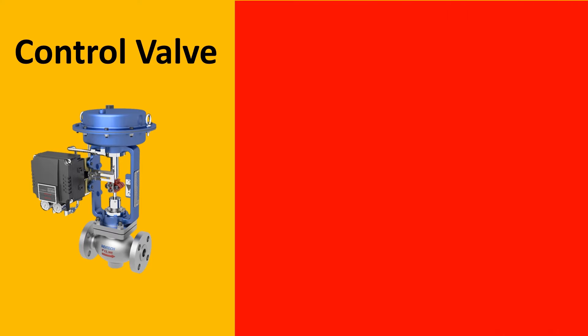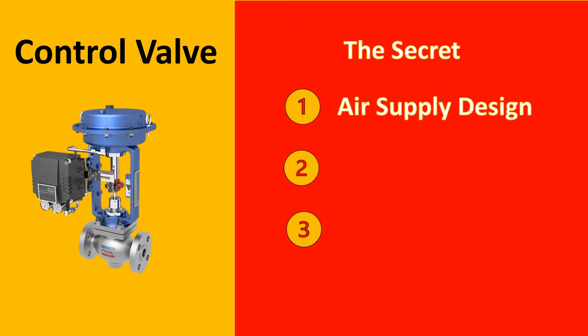So for a control valve there are three secret parameters that you need to understand. The first, second and third of them are interrelated to each other. The first one being is the air supply design. The second one is the flow path and the third one is the actuator type. Let us look at the first secret.